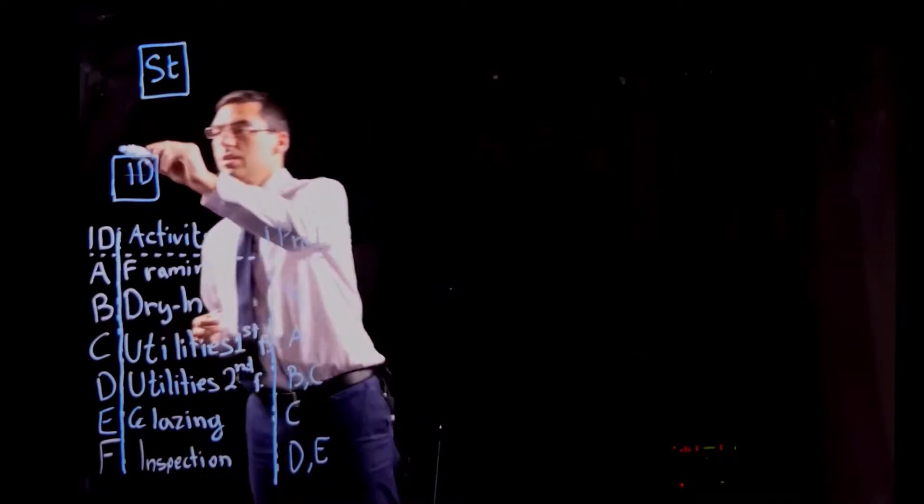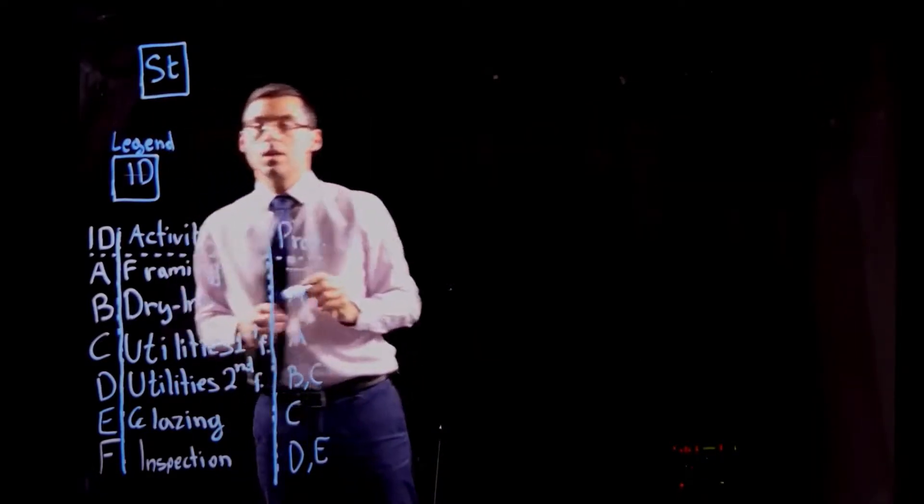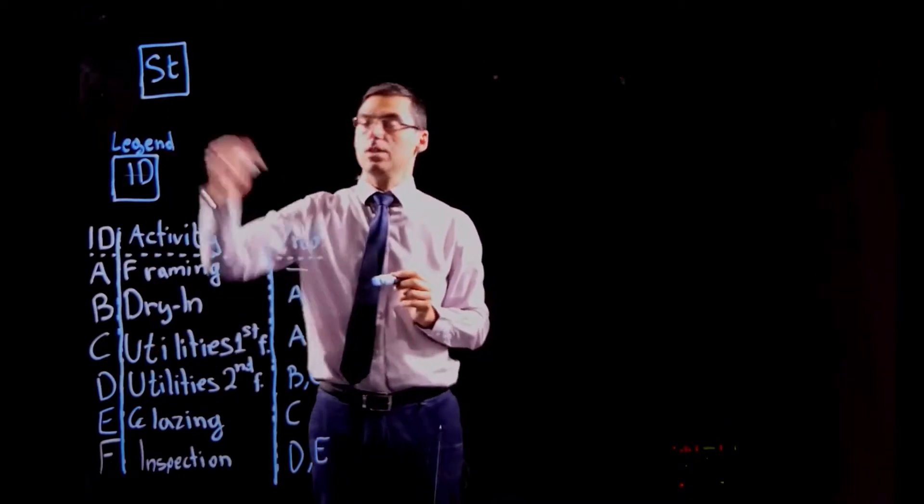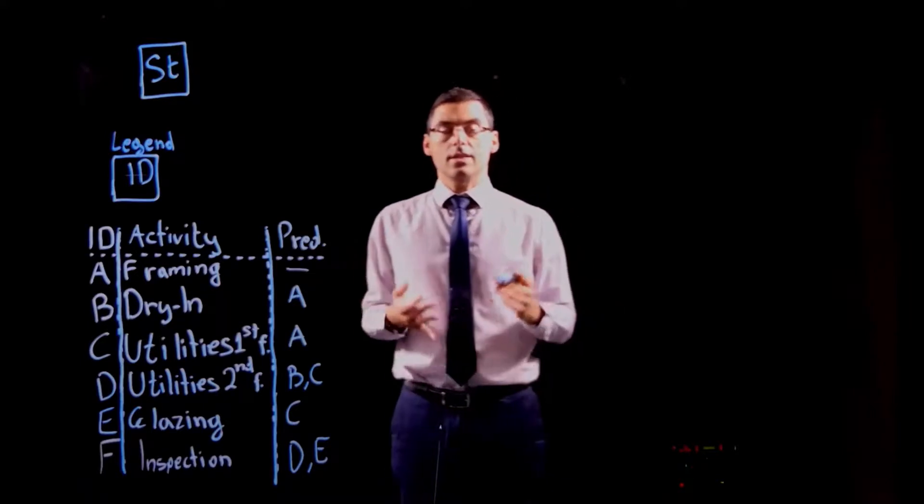So this is our legend and it tells us that the ID of the activities is going to be used as the basic information in the node. Okay, what's next?